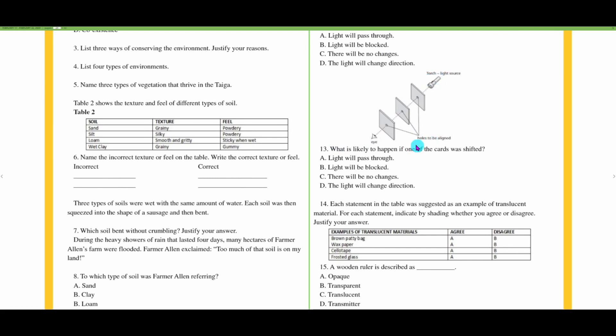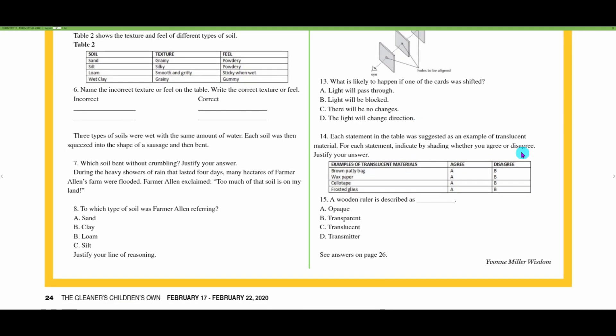For thirteen, you have this diagram with a light source, a torch, these cards with holes in them all aligned, and we can see an eye here. Number thirteen says what is likely to happen if one of the cards is shifted? Light will pass through, light will be blocked, there will be no change, or the light will change direction. I will go with B, the light will be blocked, because these are opaque. If I pull this, the holes are no longer aligned and light will be blocked by the opaque object.